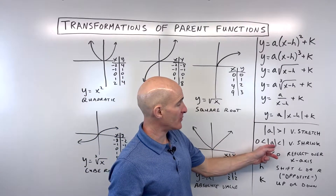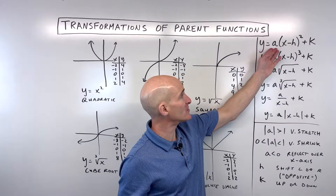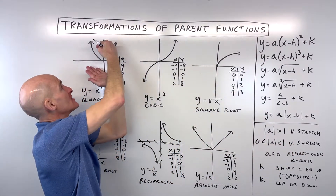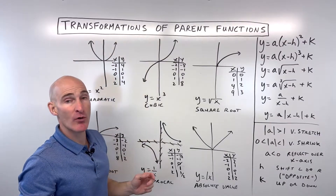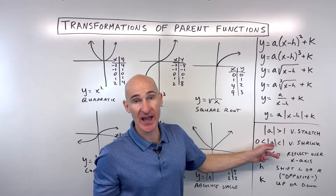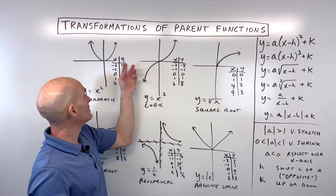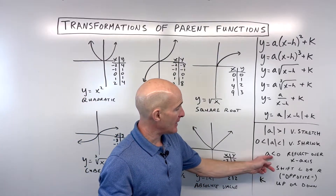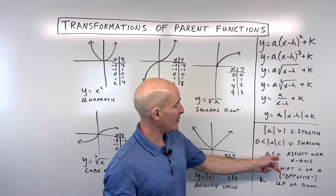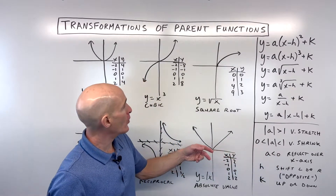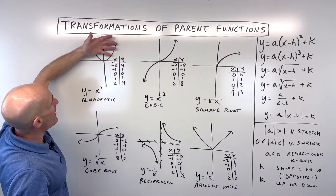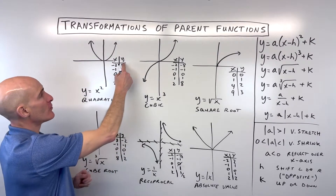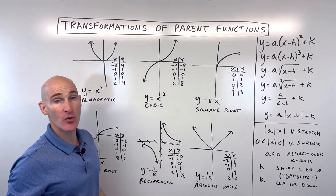If the absolute value of A is between 0 and 1 — say a half, a third, or a fourth — we call it a vertical shrink, squeezing the graph towards the x-axis by multiplying all y values by that number. If the A value itself is negative, meaning less than 0, it takes all the positive y values and makes them the opposite, which reflects the graph over the x-axis. You can multiply all y values by negative 1 to get the new y coordinates.